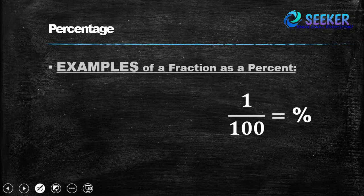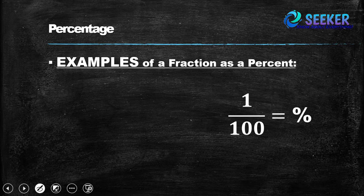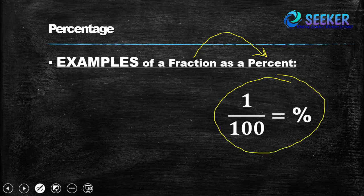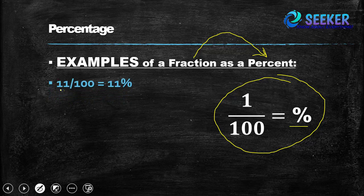Now, examples of fraction as a percentage. How can we convert a fraction form into a percent? For this we use the opposite of the last rule: 1 by 100 equals percent. For example, 11 by 100 is given and we can write this as 11 percent.